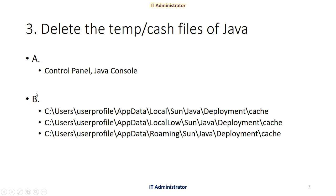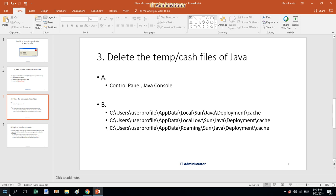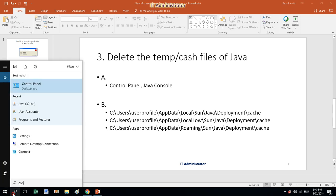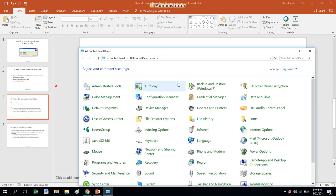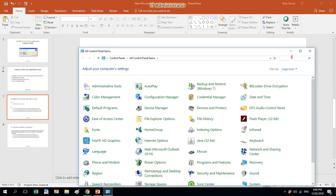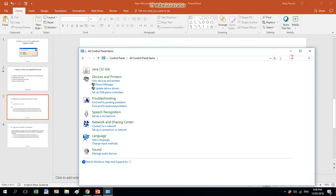The second way is to go to C drive, Users, your user profile — whatever your username is — then AppData, Local, Sun, Java, Deployment, Cache. Let me show you. I'm in Windows 10. I'm going to open the Control Panel and type Java.